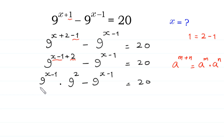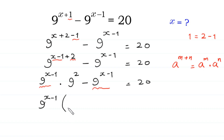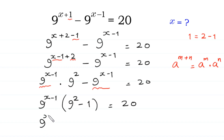Now, as you can see, 9 to the power x minus 1 is a common factor. So we factor it out: 9 to the power x minus 1, times (9 squared minus 1), is equal to 20. Next, 9 squared is 81, so 9 to the power x minus 1 times 80 equals 20.